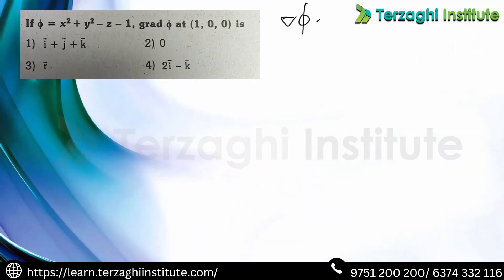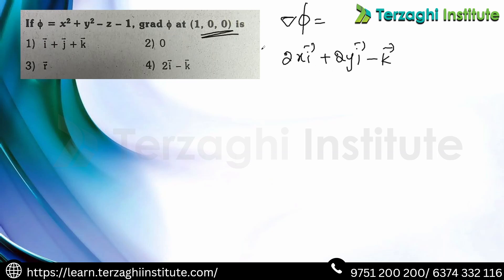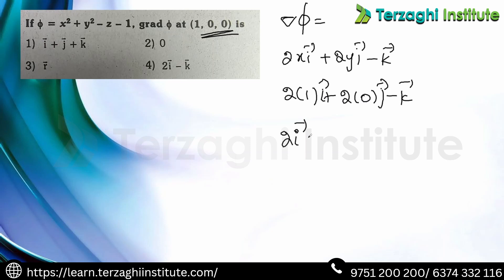For the next example using the same del·φ formula: differentiate with respect to x for i vector, y for j vector, z for k vector (constant → 0). At the given point, x = 0, y = 0, z = 2: substituting gives 2i − k. The answer is option 4.